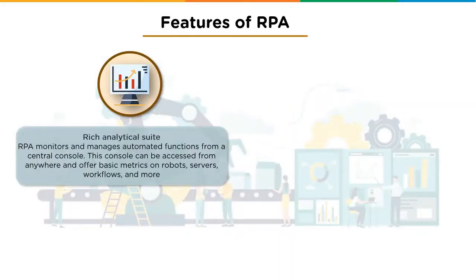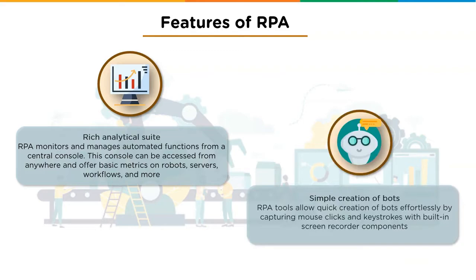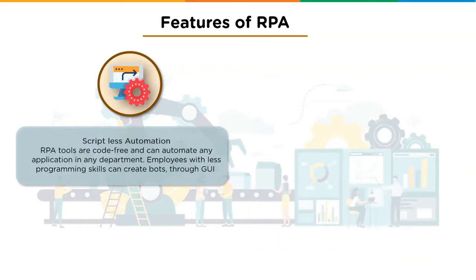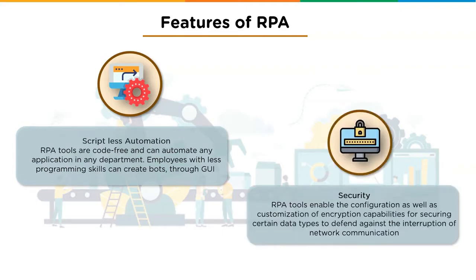Key features of RPA include: a rich analytical suite — enterprise-level RPA monitors and manages automated functions from a central console accessible from anywhere, offering metrics on robots, servers, and workflows, with no integration required since everything is inbuilt. Creation of bots — RPA tools allow quick bot creation by capturing mouse clicks and keystrokes with built-in screen recorders. Scriptless automation — RPA tools are code-free, enabling employees with minimal programming skills to create bots through GUIs.